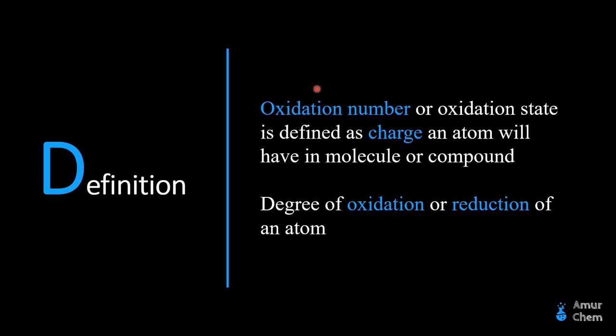We can define the term oxidation state as the degree of oxidation or the reduction of an atom. Oxidation involves the loss of electrons and reduction involves the gain of electrons by some elements.